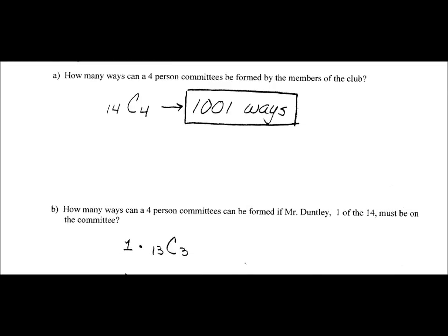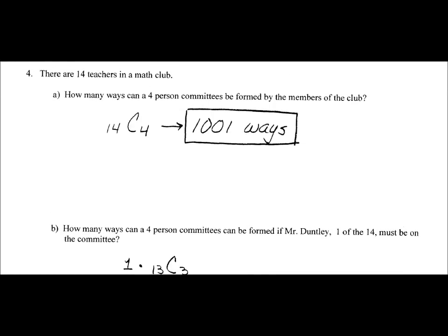Example number four says that there are 14 teachers in a math club. How many ways can a four-person committee be formed by the members of the club? It doesn't matter what order I choose people in for the committee, so it's a combination. 14 altogether, I'm going to choose four. 14C4 is 1001.